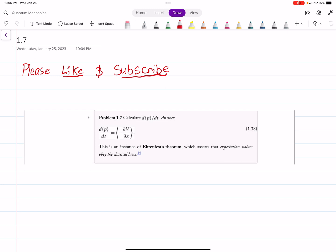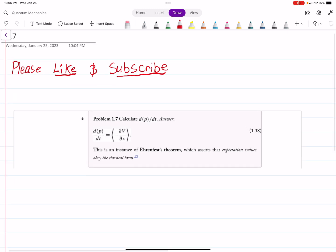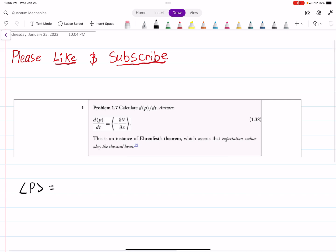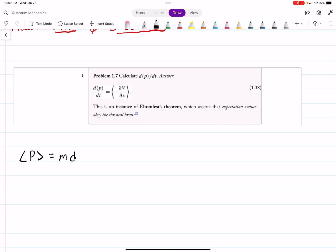So we need to calculate the time derivative of the expectation value of momentum. Let's start by, let me change colors here, writing this down as m times the time derivative of the expectation value of position, which is minus i h-bar, and then we integrate psi complex conjugate d-psi dx times dx.